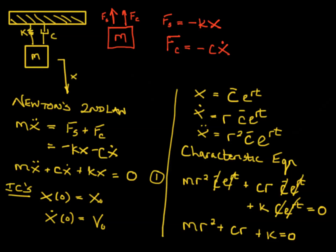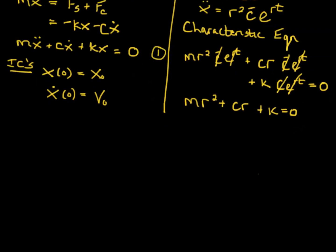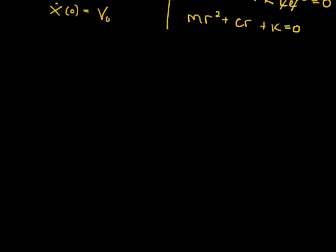Let me just move this up. Alright, and the solution to the characteristic equation, the roots of, it's just a second order polynomial, the roots are given by r 1 and 2 equals minus C plus or minus the square root of C squared minus 4 M K all divided by 2 M.